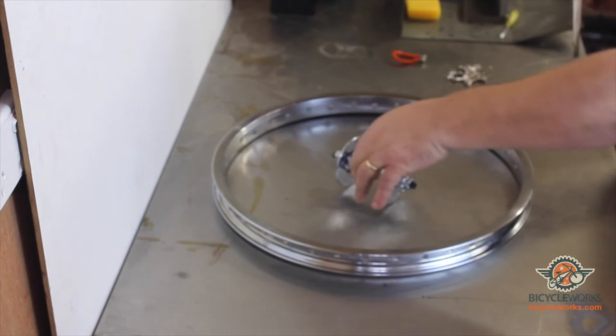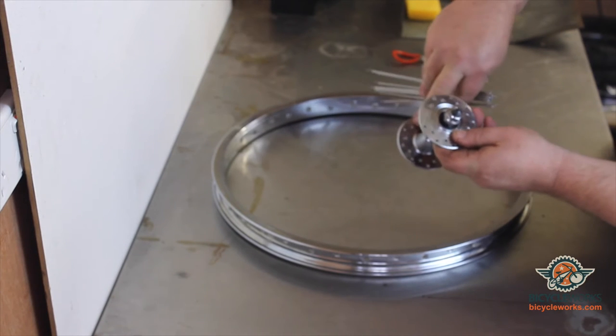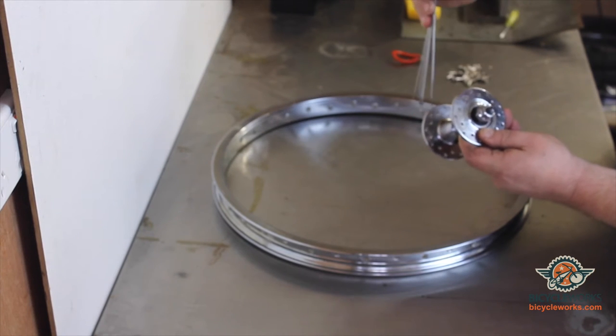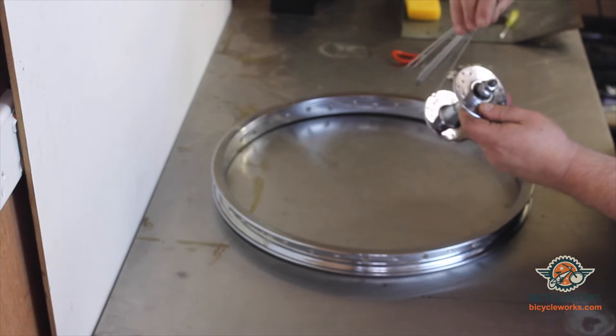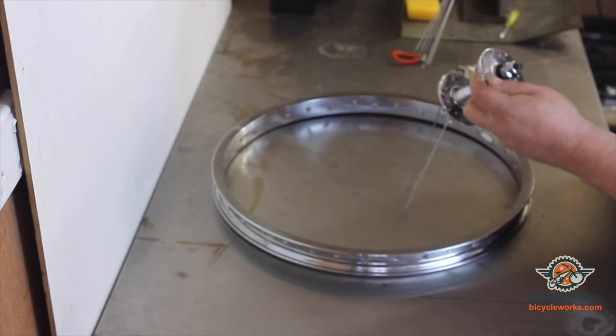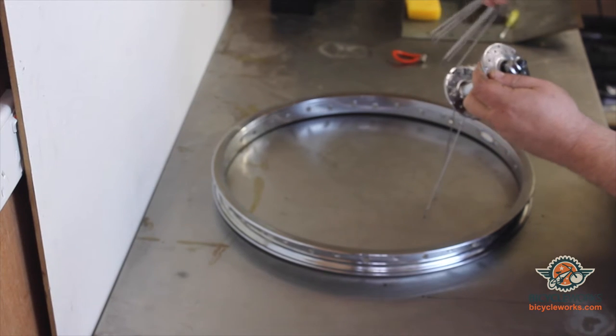Now with the wheel we're going to start lacing from the inside of the hub on the outside hole. You'll see the holes are offset. Starting with the first hole, fill all the holes around the hub.